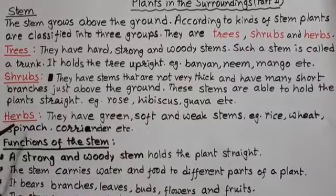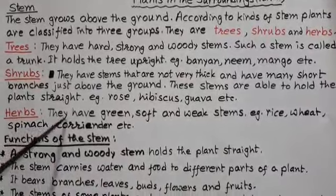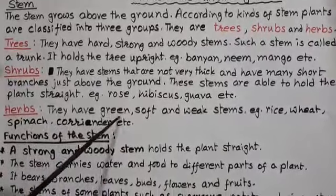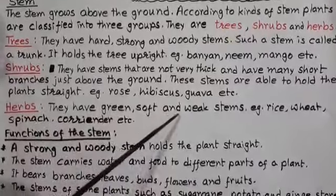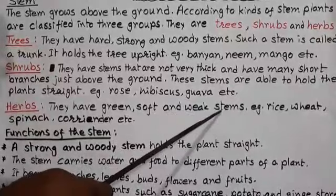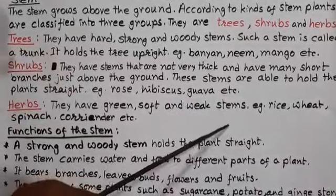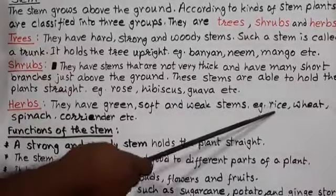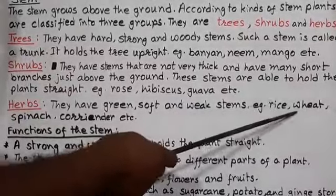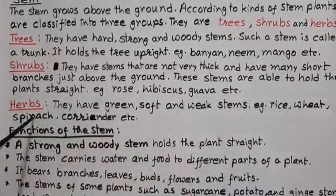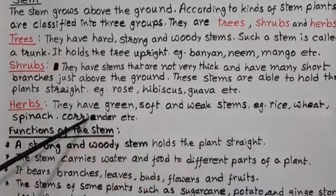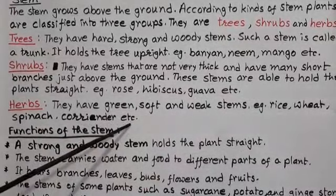The third kind of plant is herbs. They have green, short and weak stems. Examples are rice, wheat, spinach, coriander, etc.